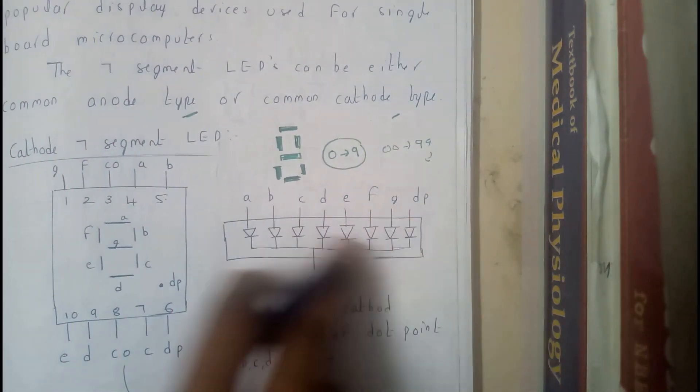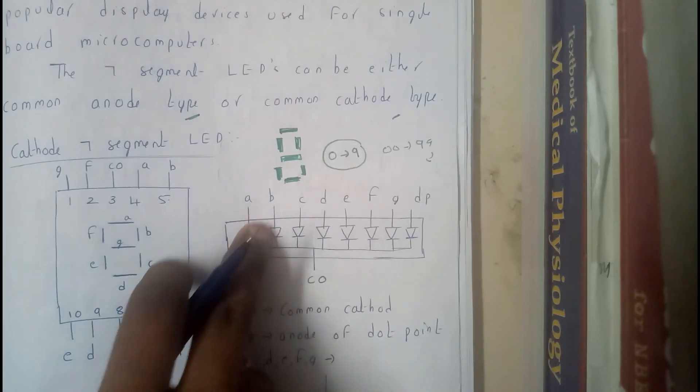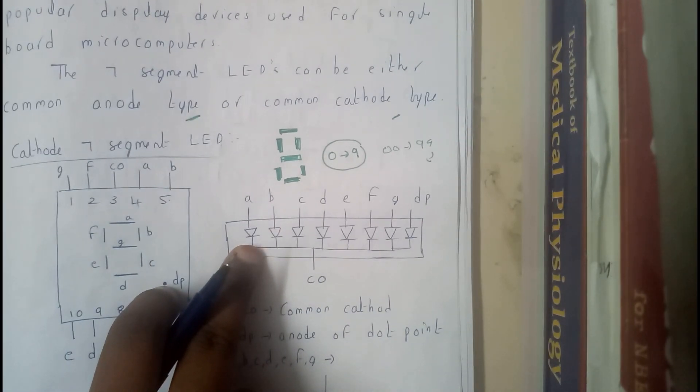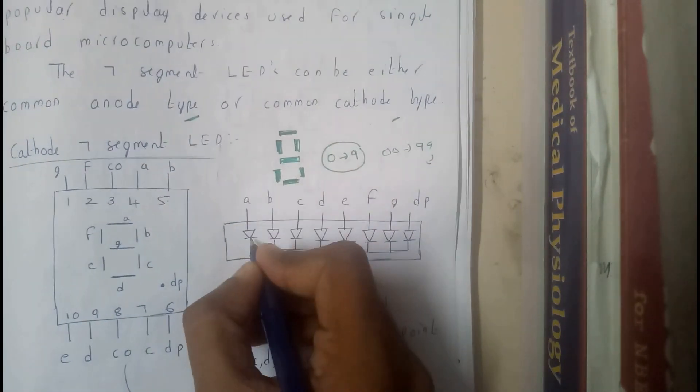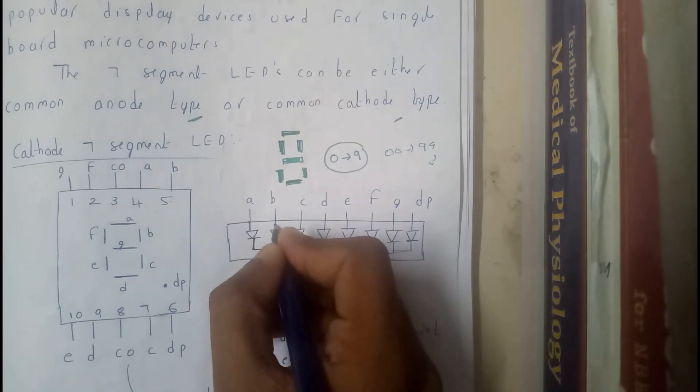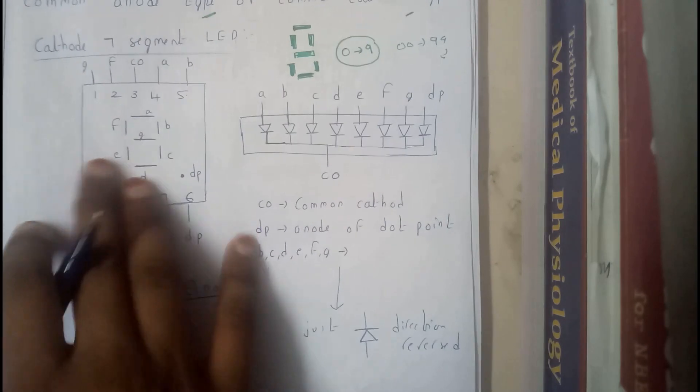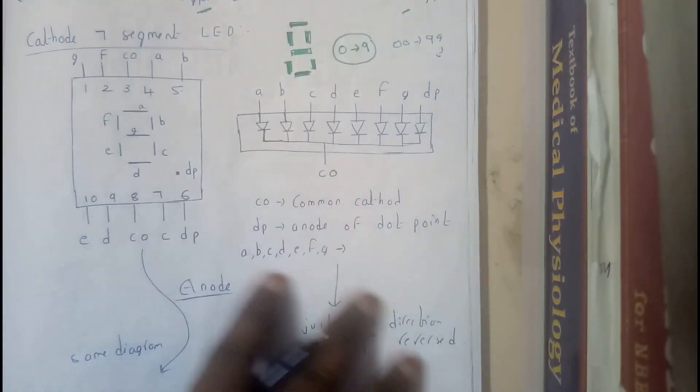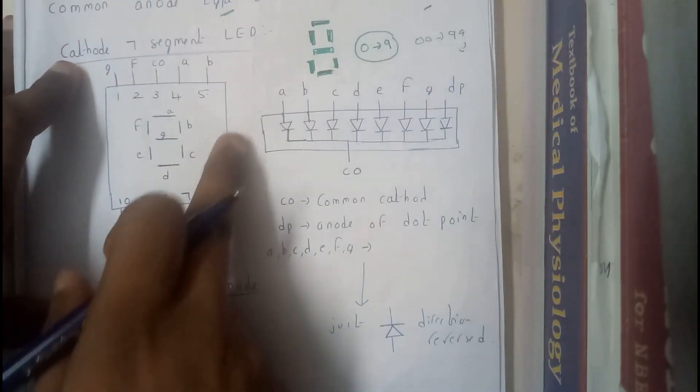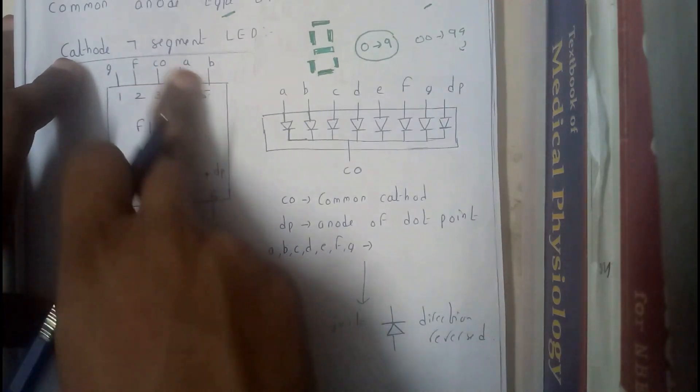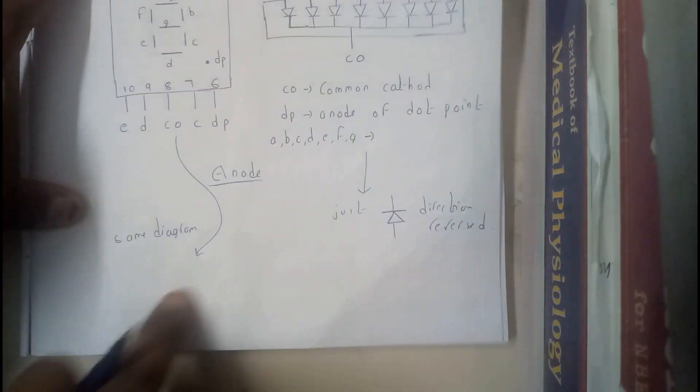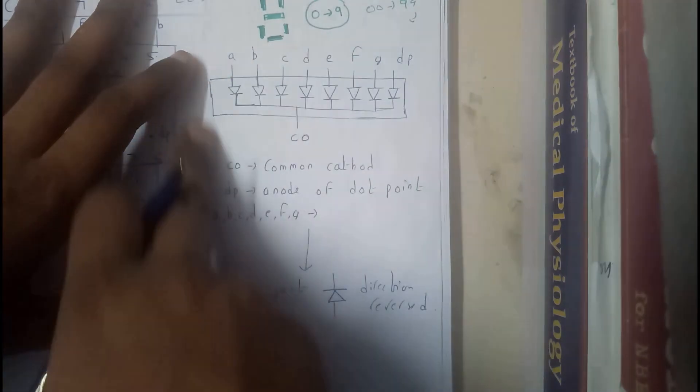So we'll be calling as internal connections in seven segments. So the internal connections will be something like this. They will be like this. This points towards this side. So now I hope everyone got a small idea on cathode seven segment.